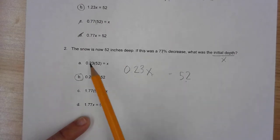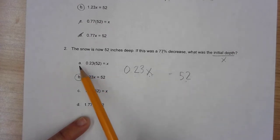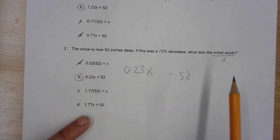But I want to go through them one more time. 23% of 52 is gonna get me to X. Now that's gonna get me a number that's way less than 52, right? And in this story they tell you that the original depth or the initial depth was way larger than 52. So just mathematically speaking, that can get you to the answer. Now we have a 77% increase to 52. Now that is a huge mistake.